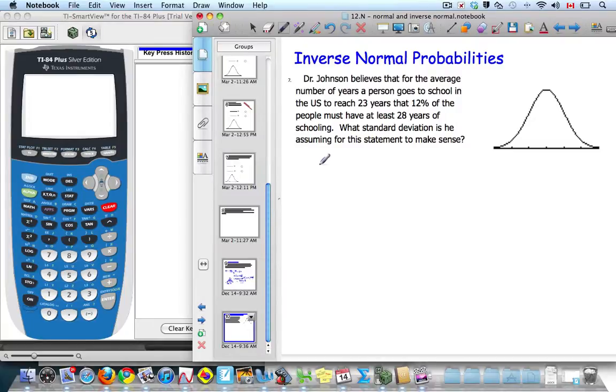When I'm dealing with normal probabilities, if I'm given some kind of a percent, so like 12%, and I want to change that to a number, I have to use inverse norm.